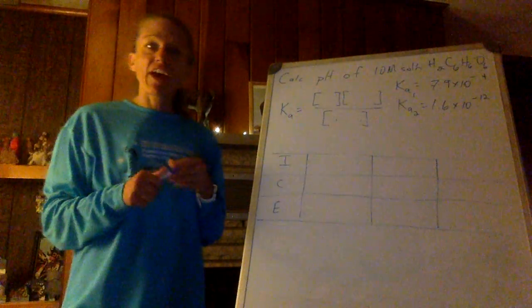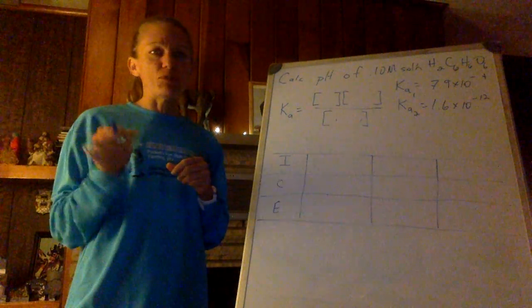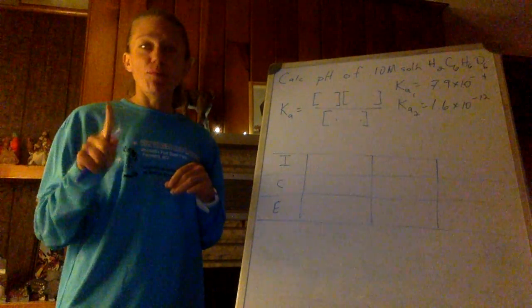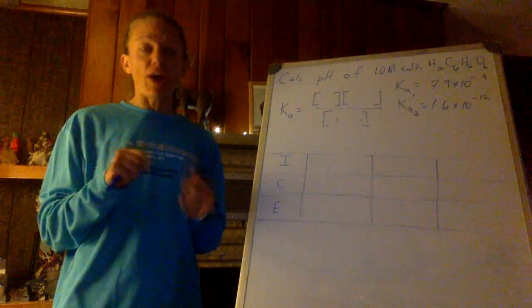Part 2. Polyprotic acids are really coming out to an excuse to practice that ICE chart. Polyprotic acids have more than one proton they're willing to give up.